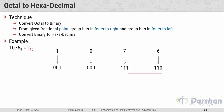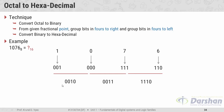The first group will be 1110, the second group will be 0011, and the third group will be 0010. So we are left with three groups: 0010, 0011, and 1110. In the last step, we convert each four-bit binary group to a hexadecimal digit: 0010 is converted to 2, 0011 is converted to 3, and 1110 is converted to E.